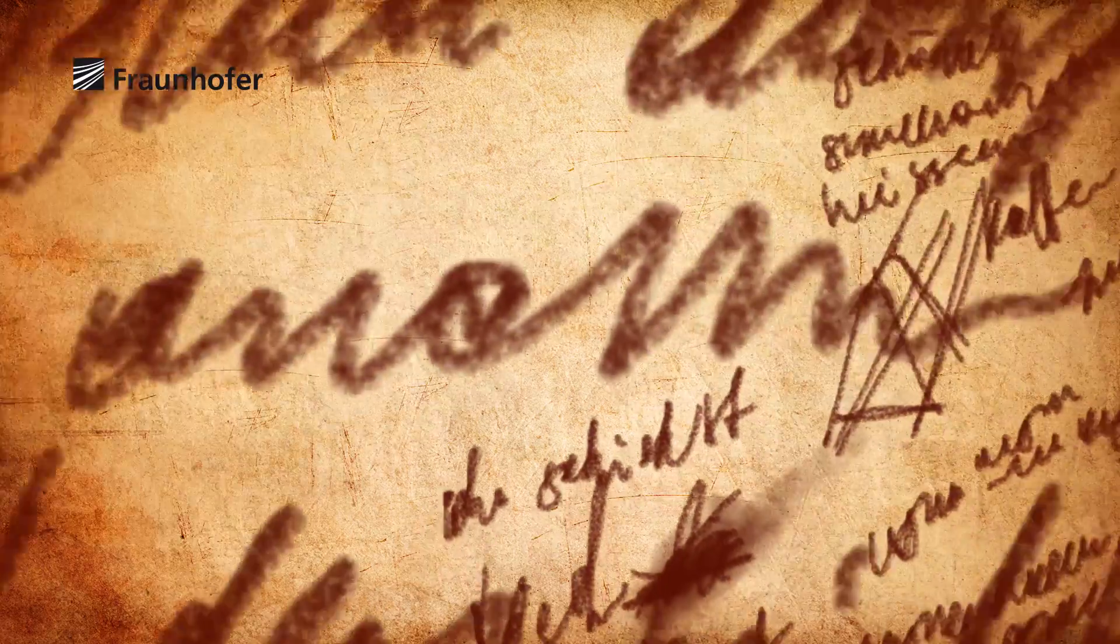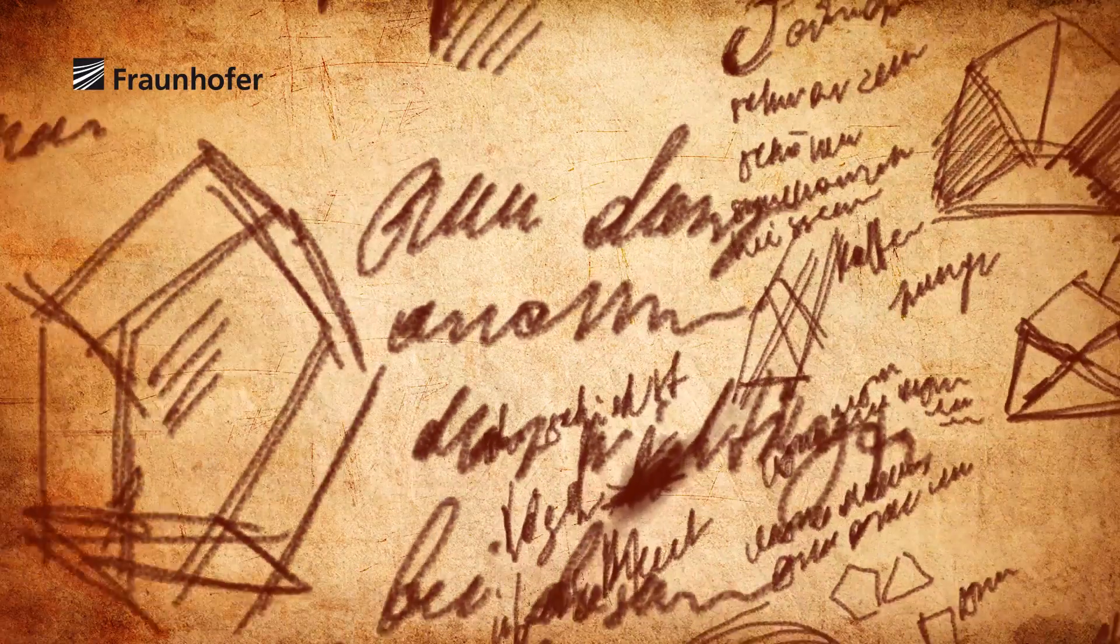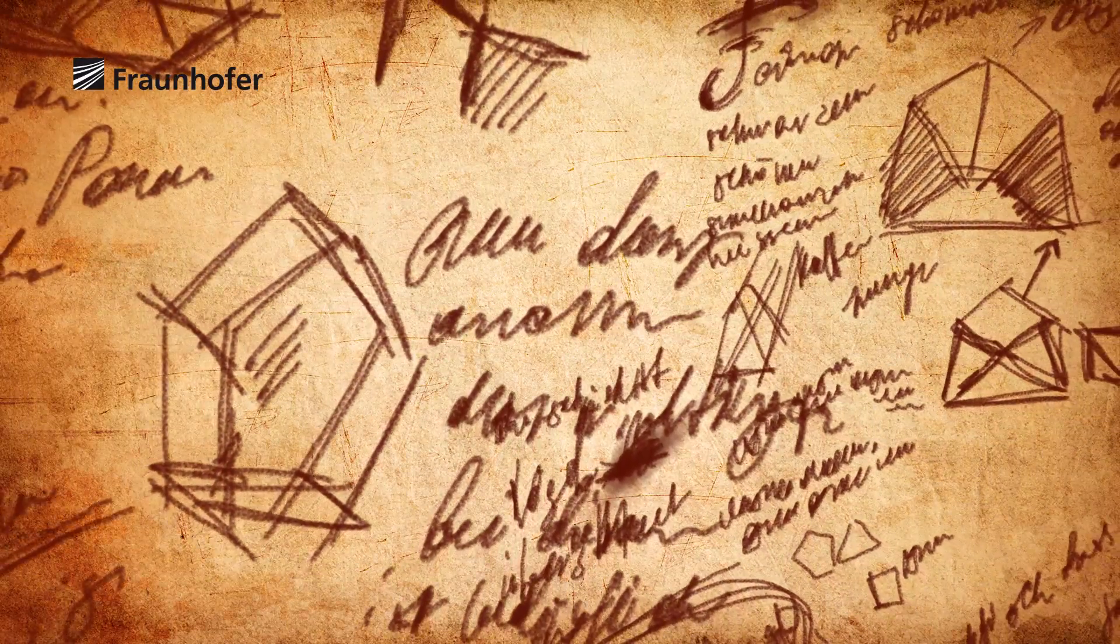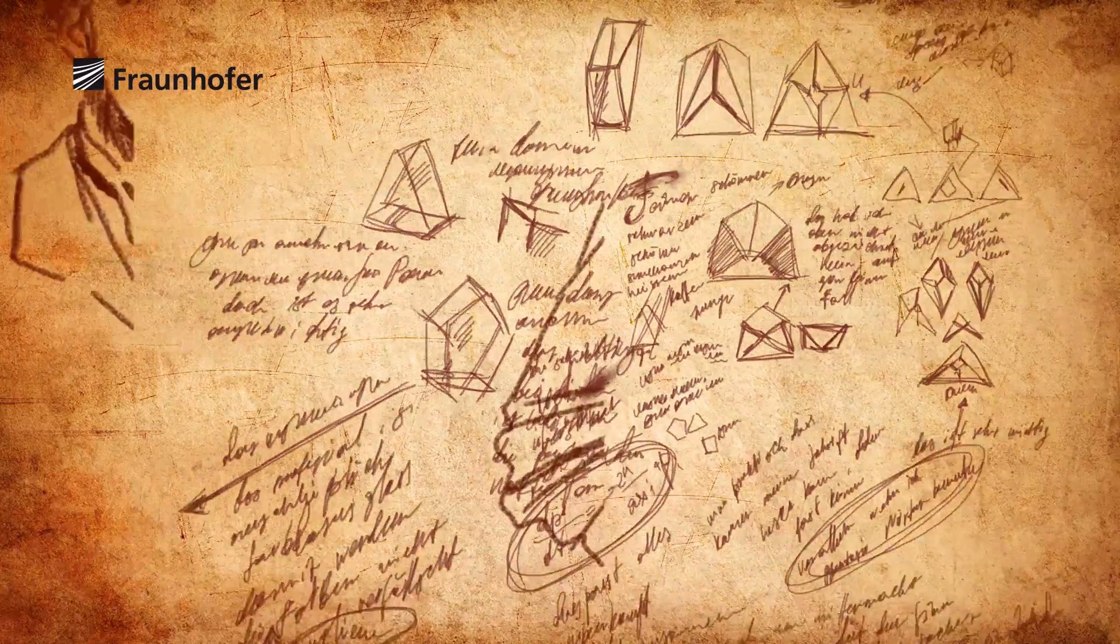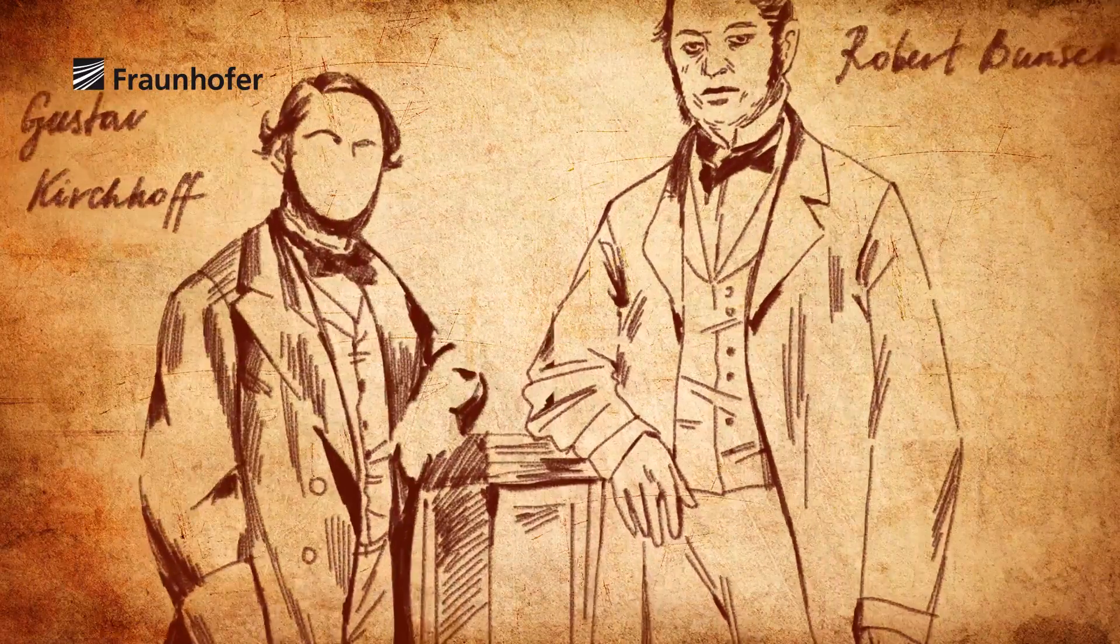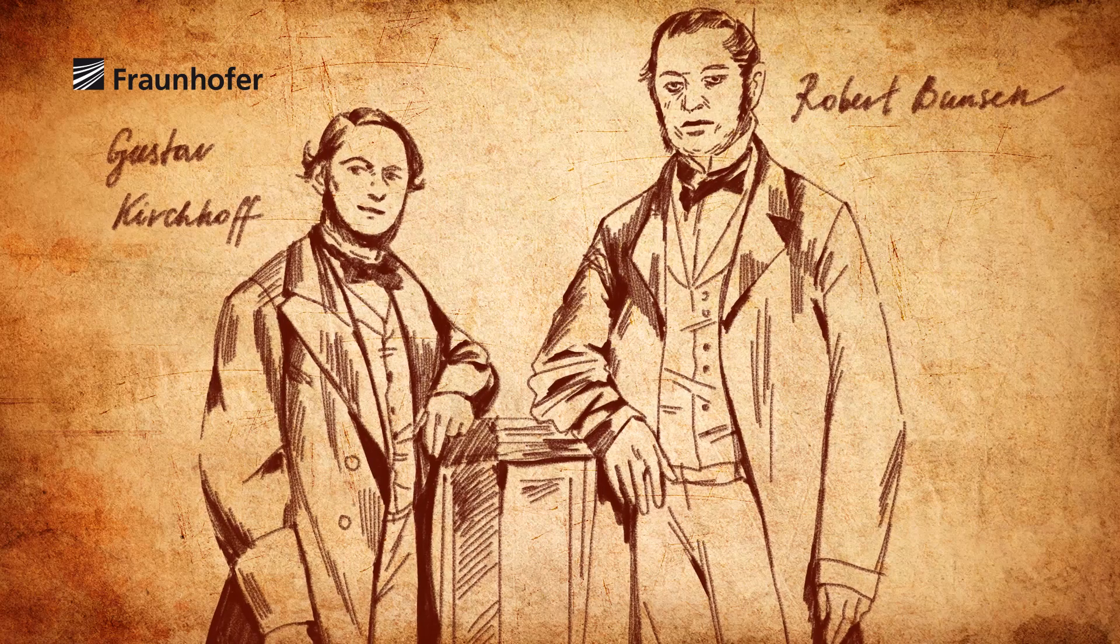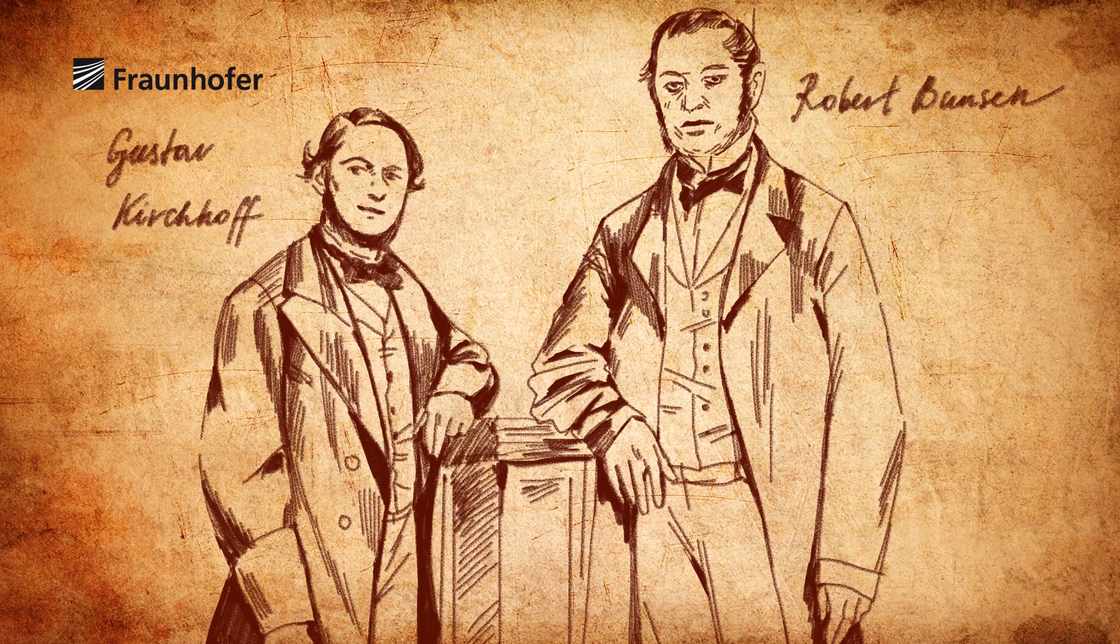After 1826, other scientists tried to comprehend how the Fraunhofer lines work. It was not until 1860 that Gustav Kirchhoff and Robert Bunsen succeeded in revealing the secret of the dark lines.